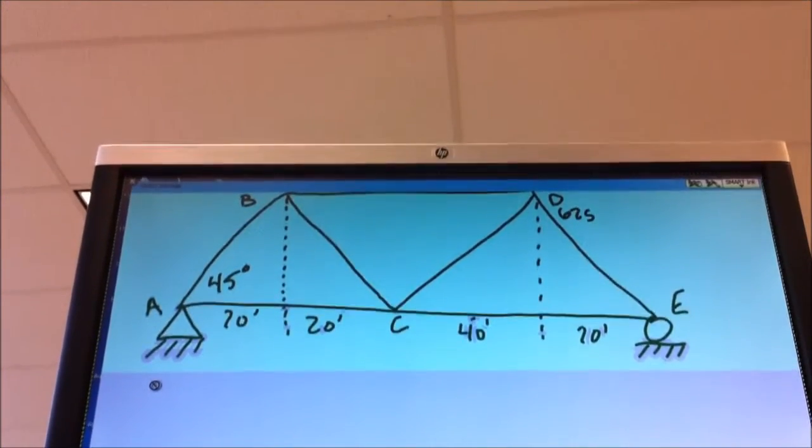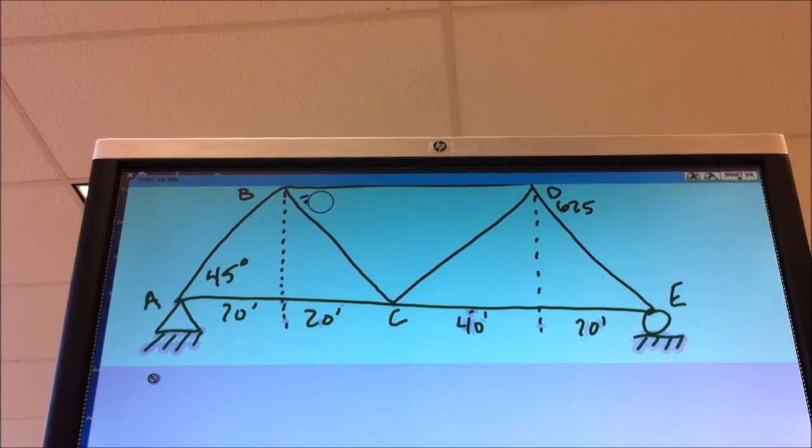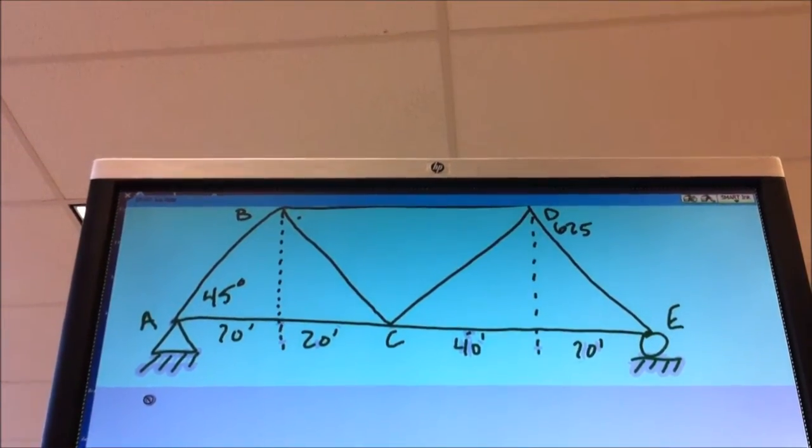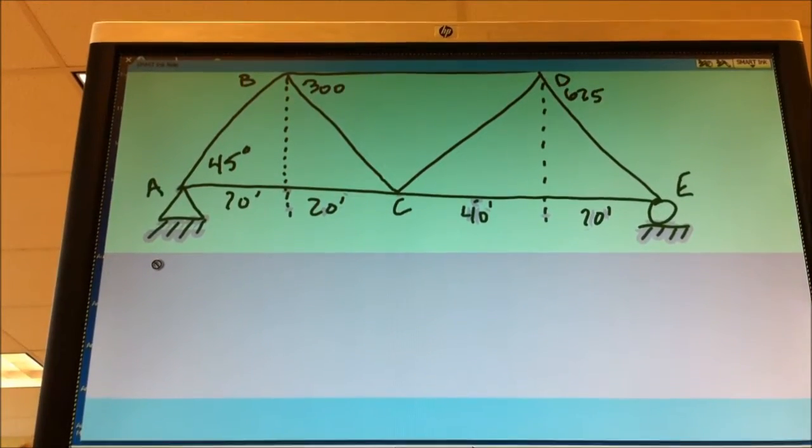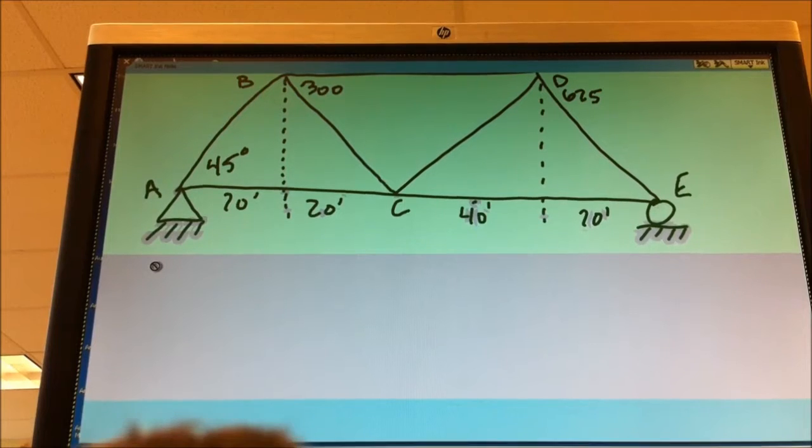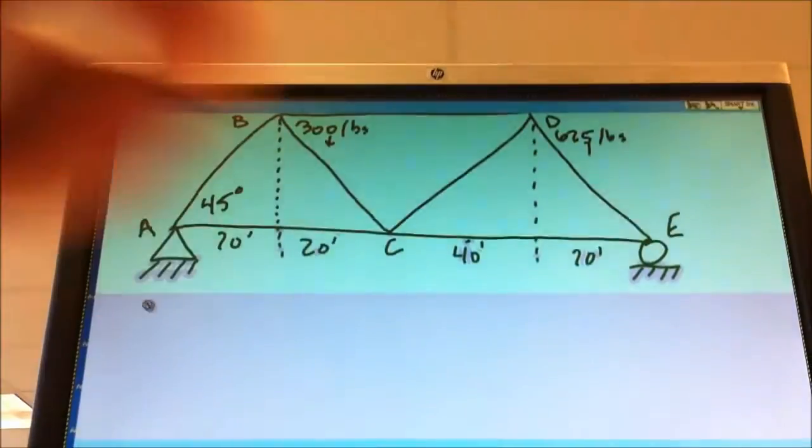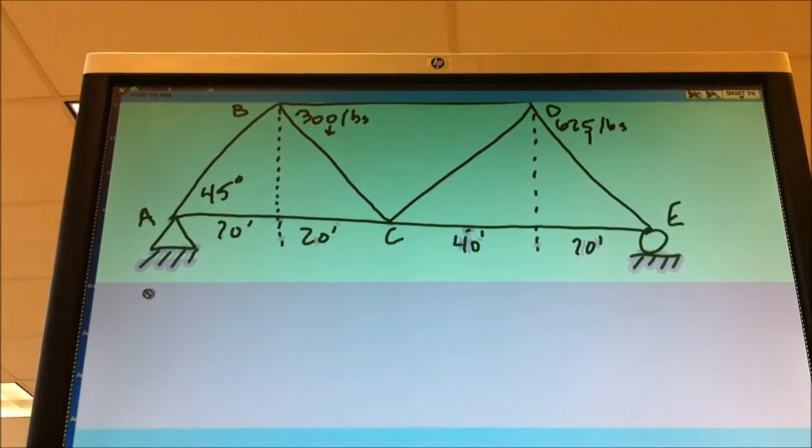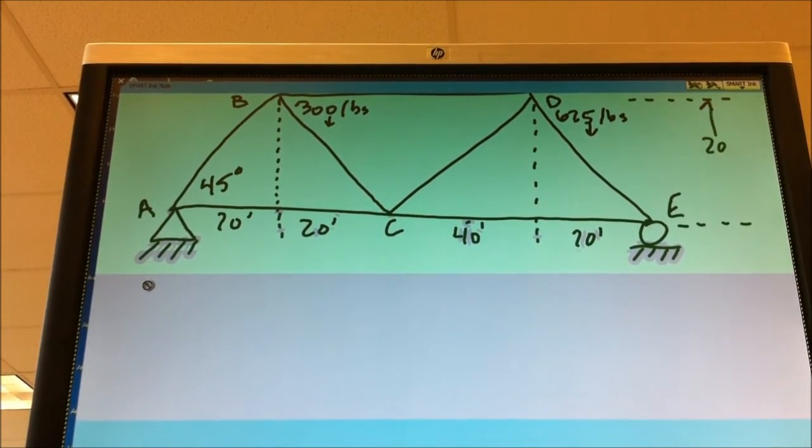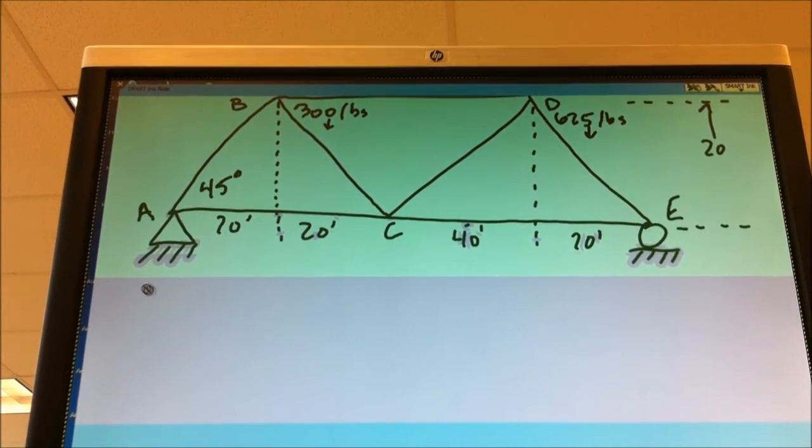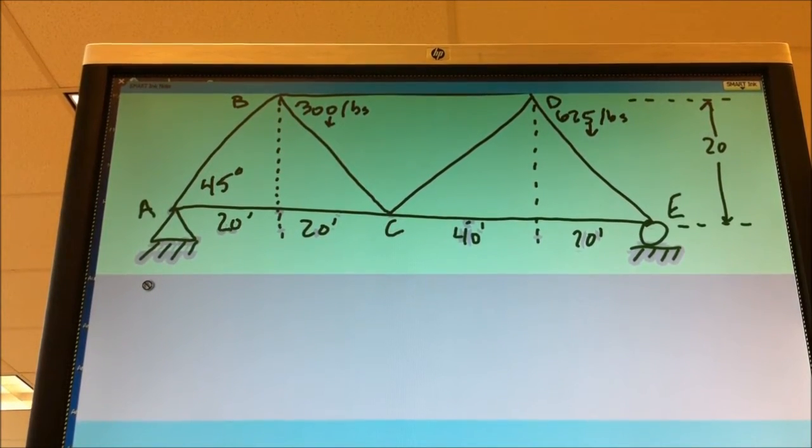Which problem are we on? It's his own. Okay, more similar. You're right, 300. Good call. So B is 300 pounds? That little line. Yeah, B is 300 pounds. D is 625. This is 20 feet. All right.